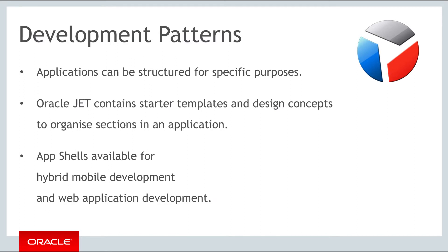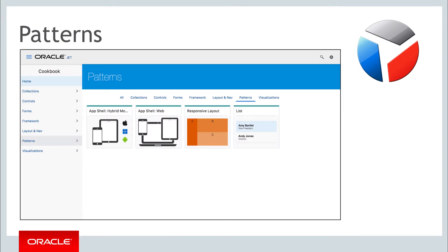These initial page layouts are often referred to as app shells. JET provides these app shell style starters for both hybrid mobile development and web application development.